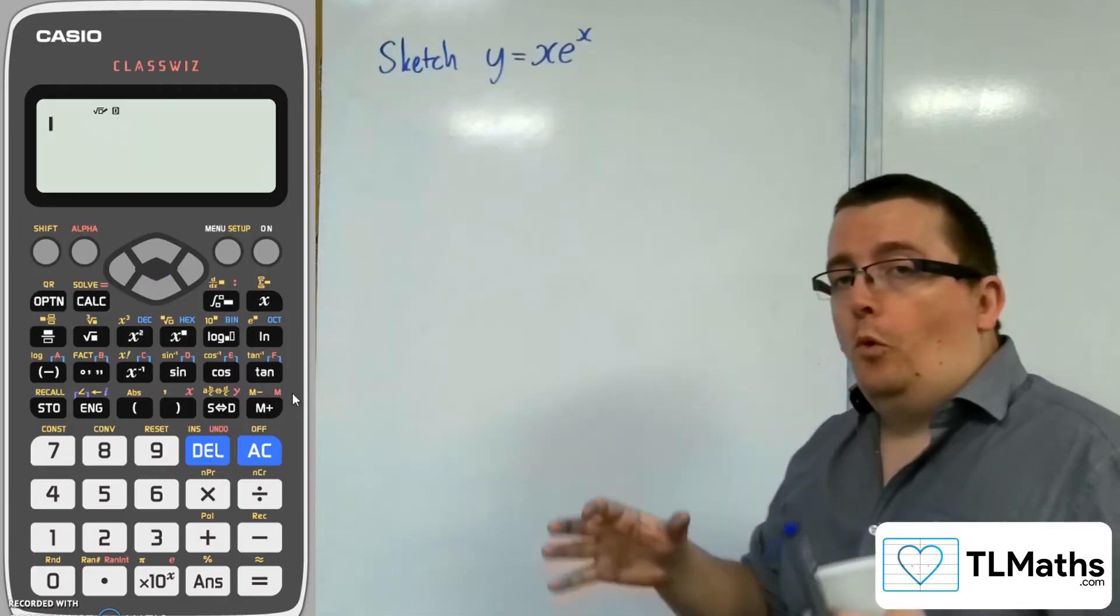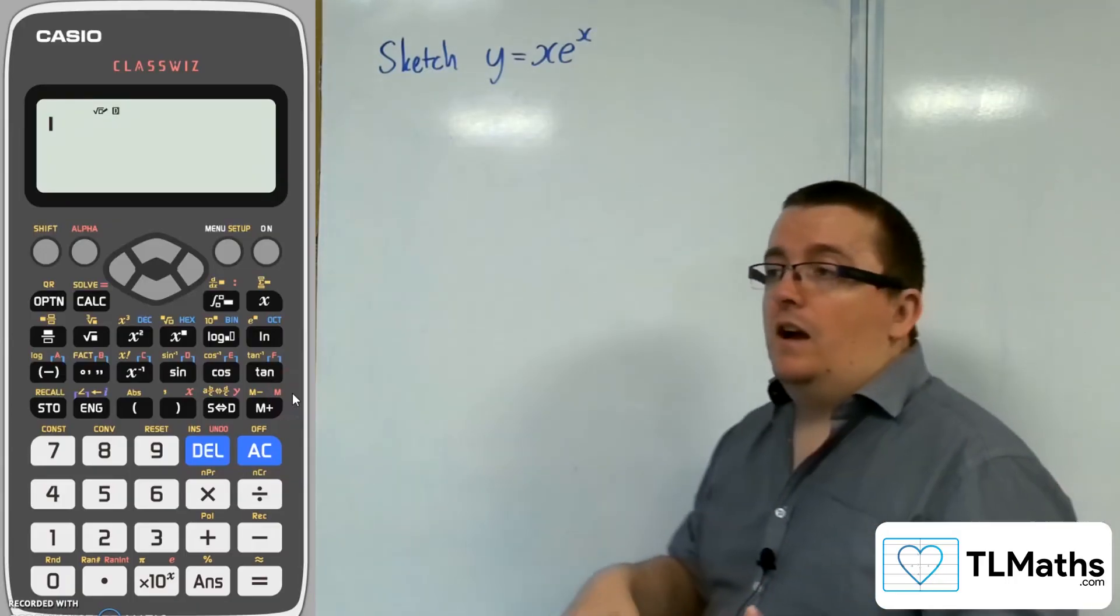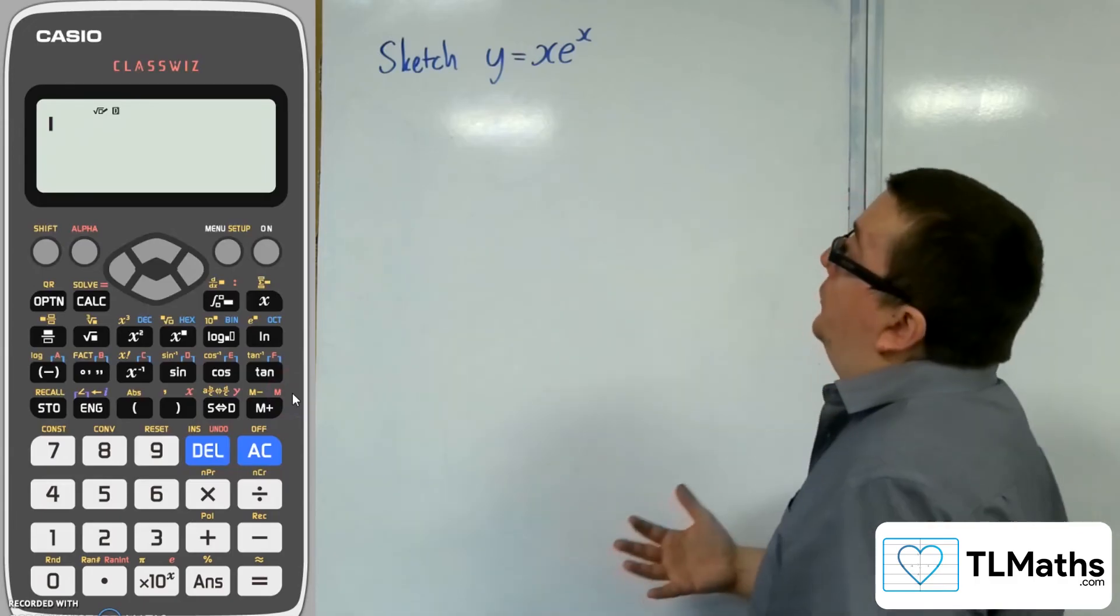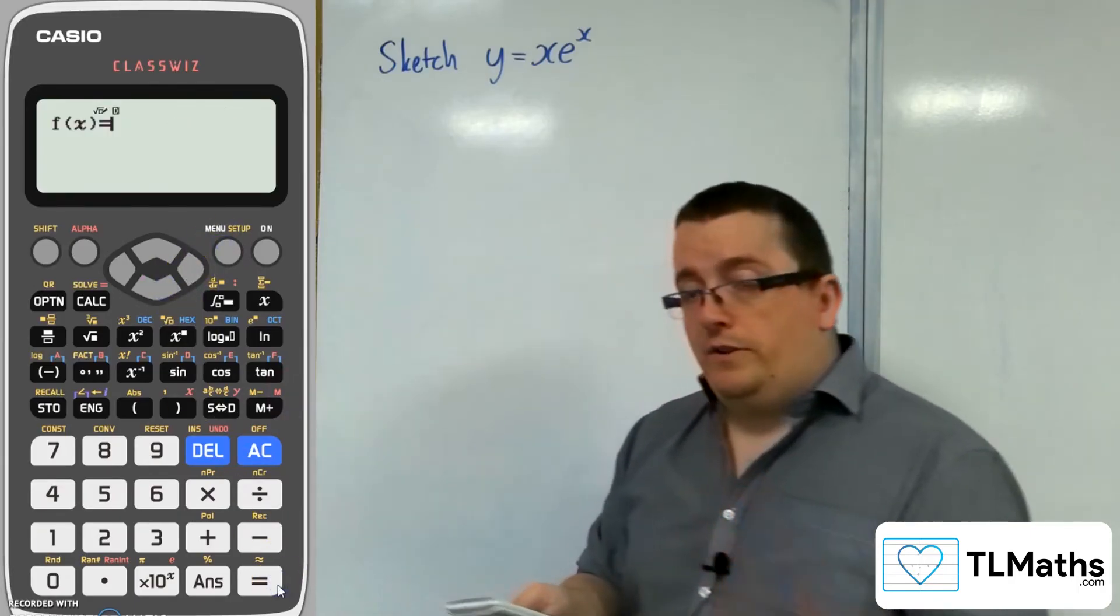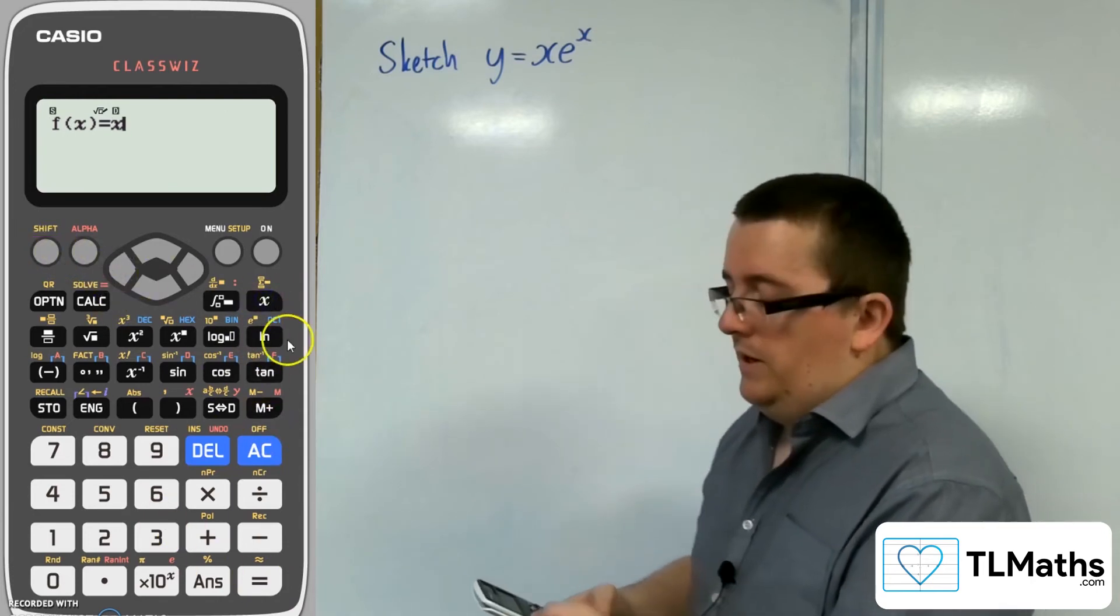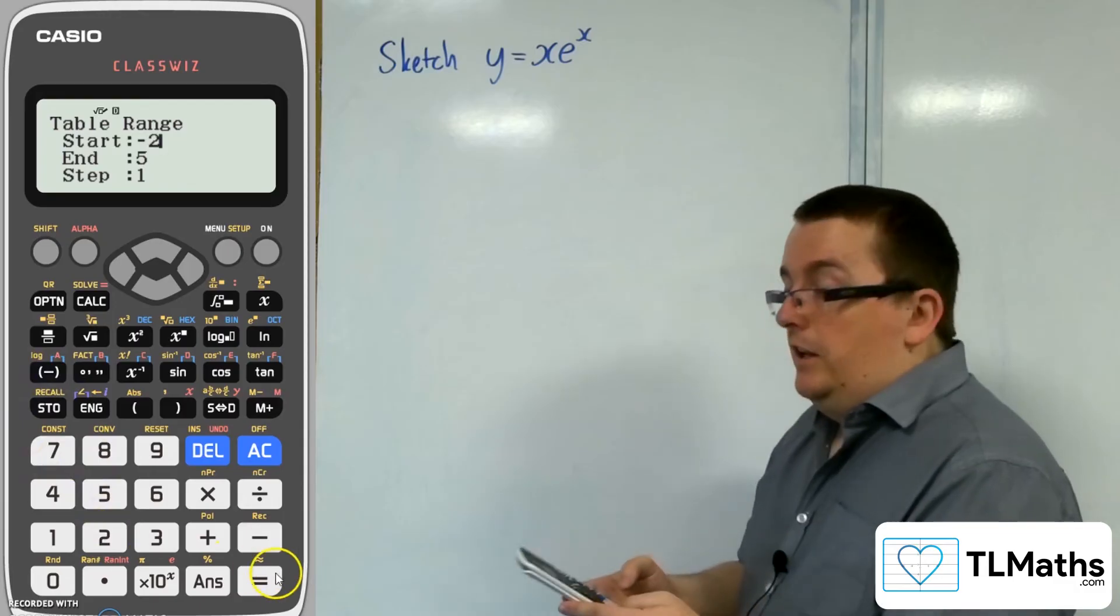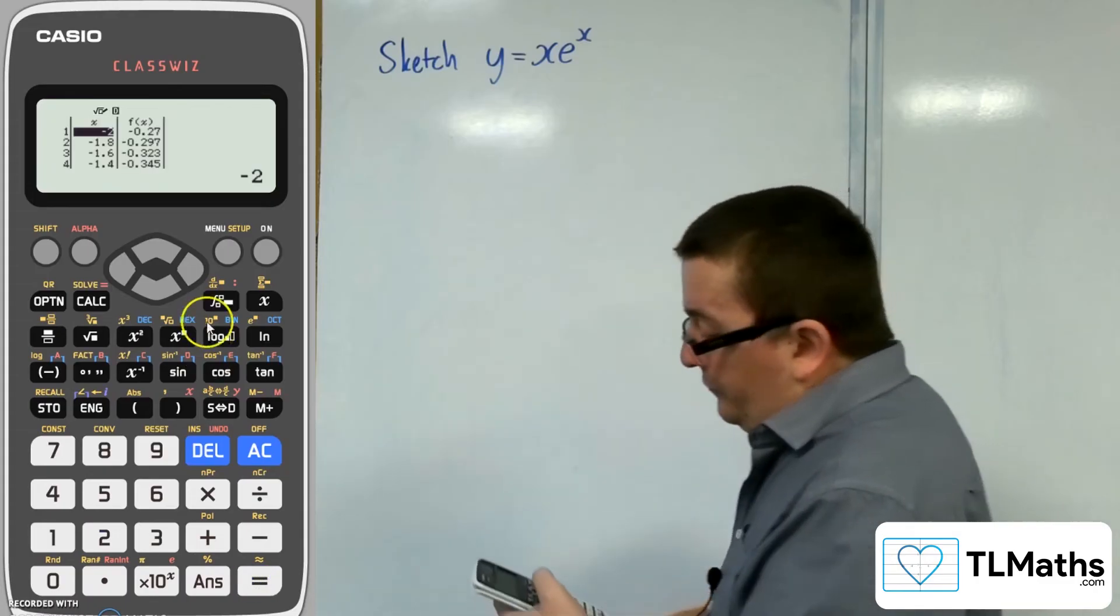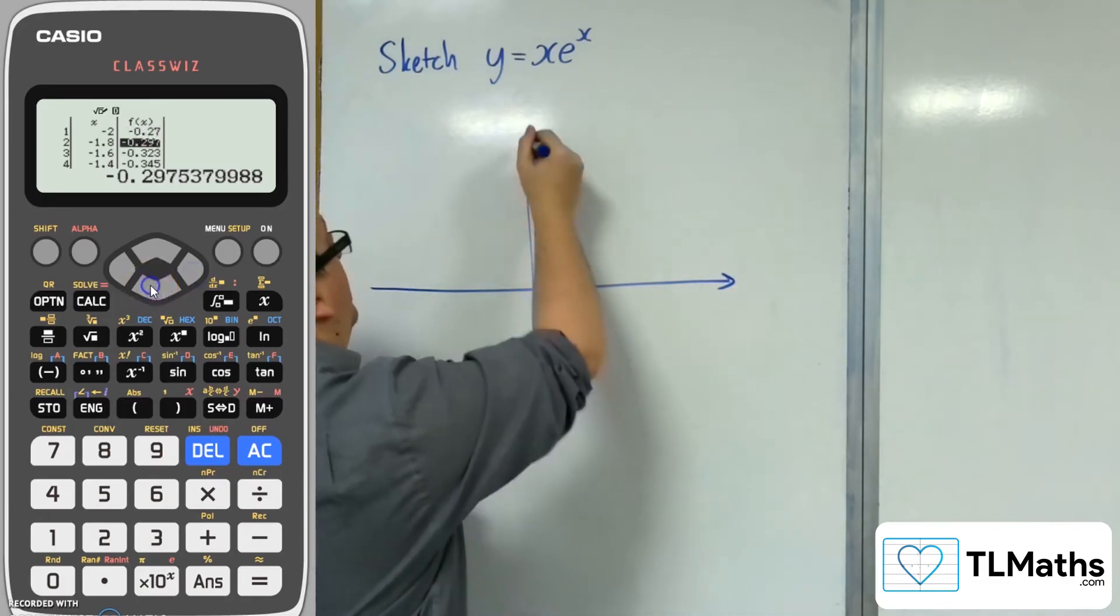Now it may also be that you end up wanting to sketch a graph just to see how it behaves, maybe for a range and domain problem, for example. You're not quite sure what the graph looks like. So let's say you've got this y = xe^x. What you can do is go into the table function, type in xe^x as your f(x). I don't need a g(x). Let's say I want to start at -2, end at 2, and I can go up in 0.2s. What you'll get is the calculator plugging in all of these values for you, so you don't have to do it yourself.